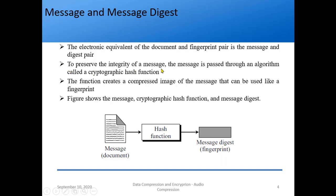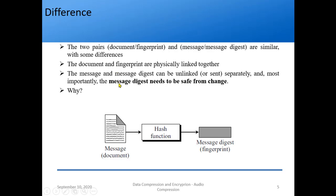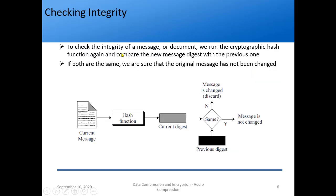To preserve the integrity of the message, the message is passed through an algorithm called a cryptographic hash function. This function works on the message and creates a compressed image that can be used like a fingerprint — this is the concept of message and message digest. The message digest needs to be safe from change. To check integrity: we have the message, apply the hash function to get the current digest, then compare it to the previous digest. If both are the same the message has not been changed; otherwise the message has been changed and we discard it.